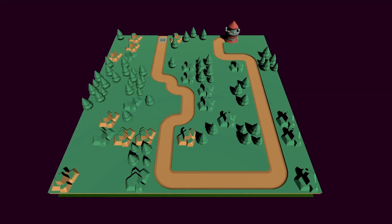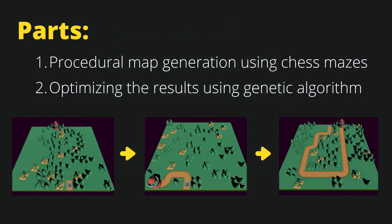This tutorial will be split into two parts. The first one will be procedural generation using the chess maze technique. The second one will be optimizing our map using a genetic algorithm.